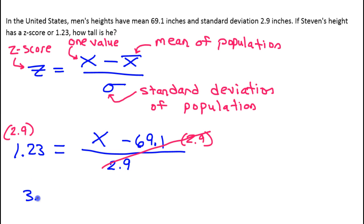So now I've got 3.567 is equal to X minus 69.1. Of course, to get X by itself, I'm going to add 69.1 to both sides.